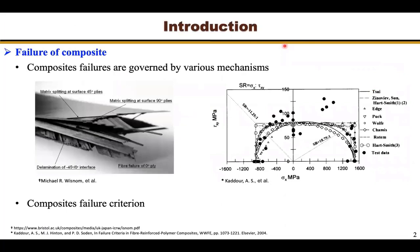A composite material is heterogeneous and usually anisotropic. A reliable design of a composite structure needs to consider the failure of a composite. However, the failure analysis of composite material is challenging, as composite failures are usually governed by various mechanisms. For example, the left picture shows a multi-directional composite laminae. The failure of this laminae is governed by fiber failure, delamination, and matrix bleeding.